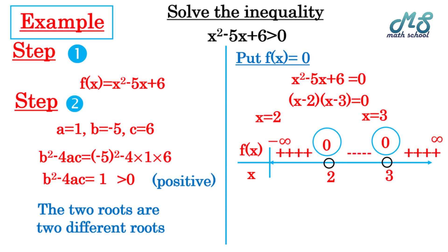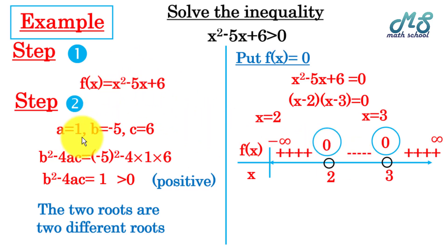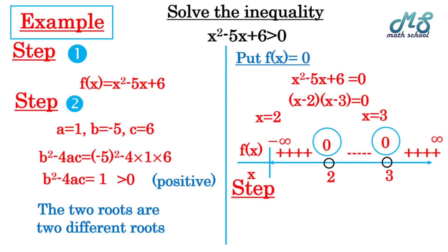At the right and left of the roots we have positive sign. Between the two roots, the sign of the function will be the opposite sign of the coefficient of x², which is a = 1 (positive), so it will be negative between the roots.